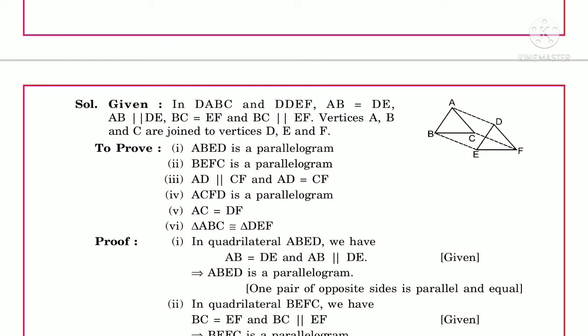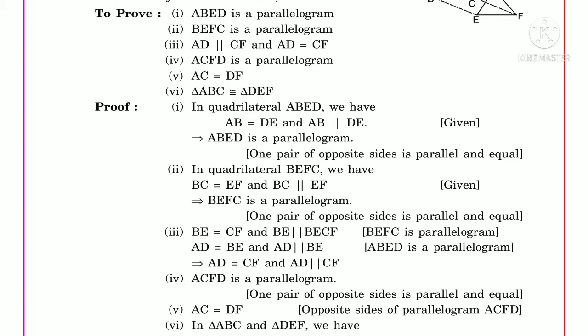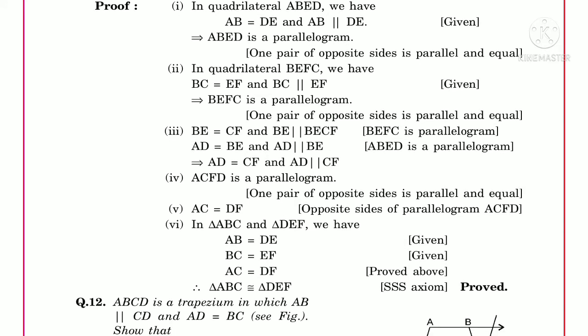In quadrilateral ABED, AB equals DE and AB is parallel to DE — already given. We know the property: if one pair of opposite sides is equal and parallel, then it is a parallelogram. So ABED is a parallelogram. Similarly for the second one, BEFC: BC equals EF and BC is parallel to EF, so again one pair of opposite sides is parallel and equal, therefore BEFC is a parallelogram.